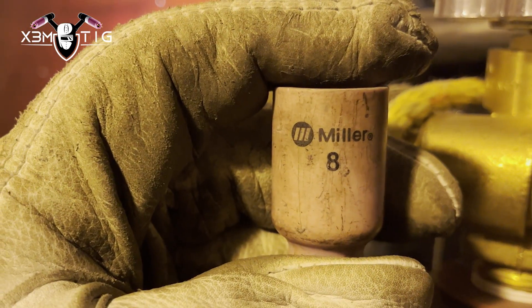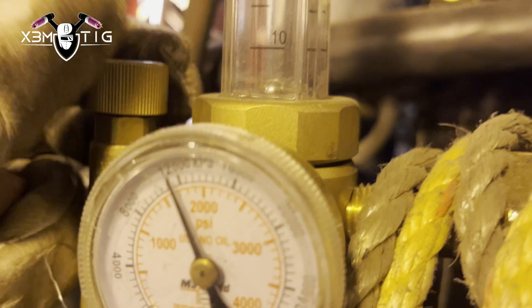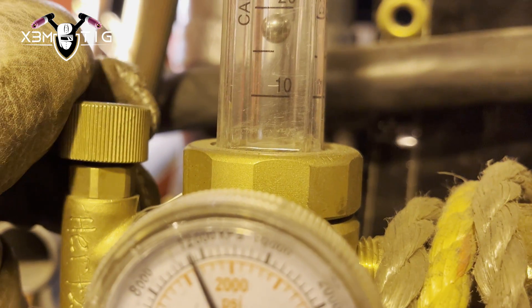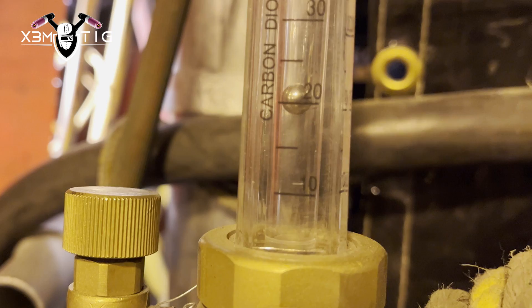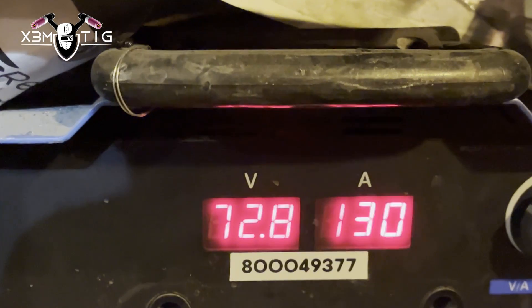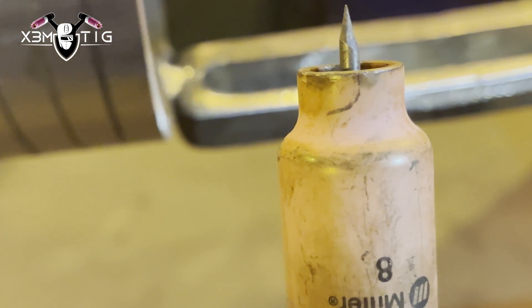For example, now cup size 8: the gas flow is between 15 to 20, so let's say around 20, and 130 amps.